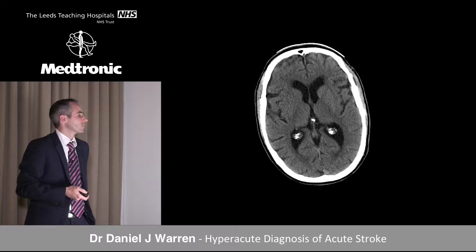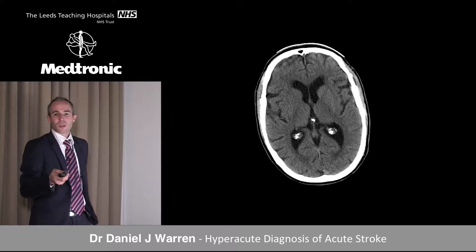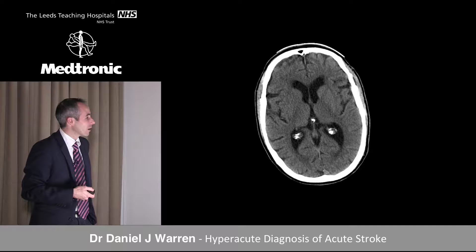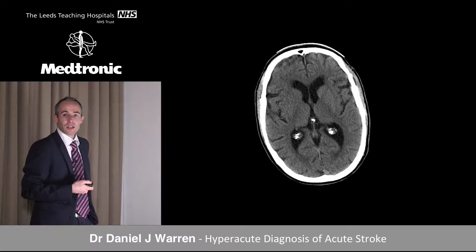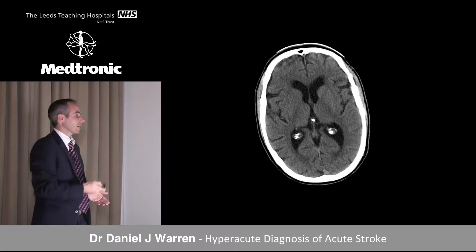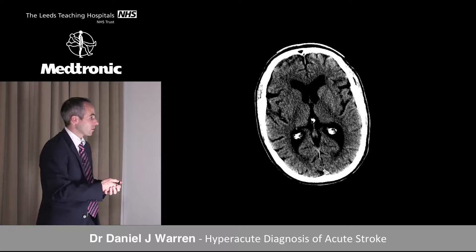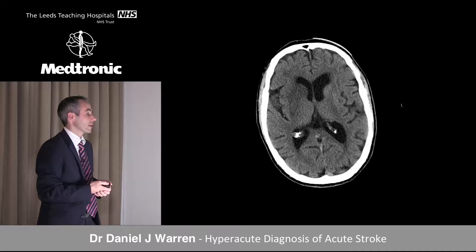On another case, the right MCA area is implicated. There's loss of the insular ribbon and the lenticular nucleus. If you're not sure, a useful technique is to narrow the window — make the grayscale a little bit darker. When we alter the windows, we can now clearly see we've lost the lenticular nucleus, whereas it's very bright on the contralateral side. At 24 hours, the completion of the stroke is confirmed.